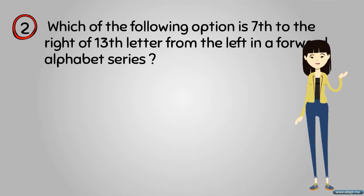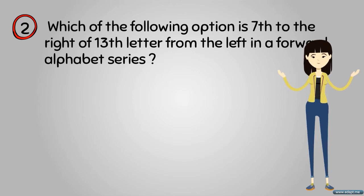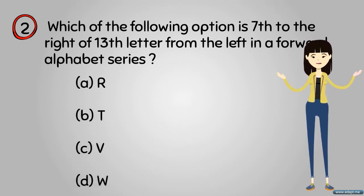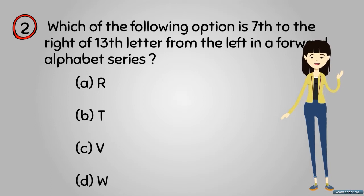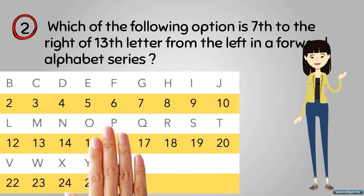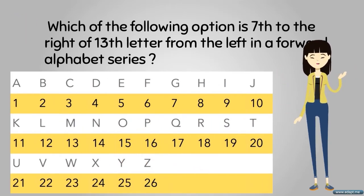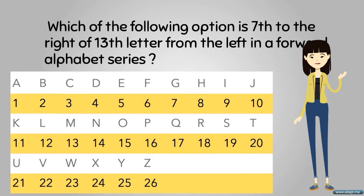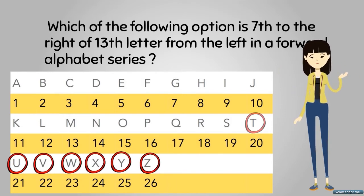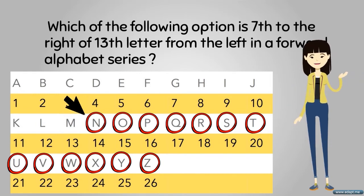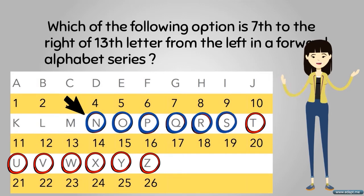Problem number two: which of the following is seventh to the right of the 13th letter from the left in a forward alphabet series? Options are R, T, V, W. A forward alphabet series is A B C D up to Z, and a backward series is Z Y X down to A. The 13th letter from the left is M, and the 7th to the right of M is T. So the answer is option B.